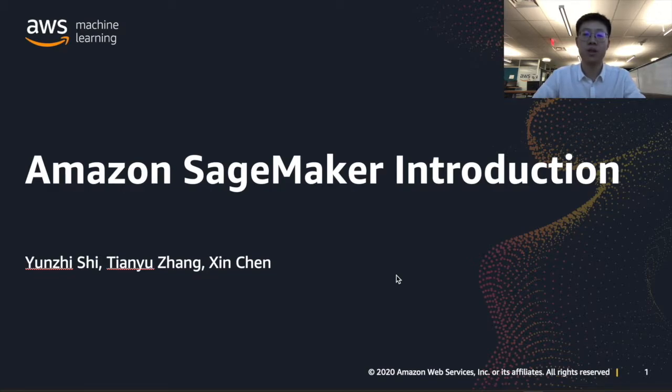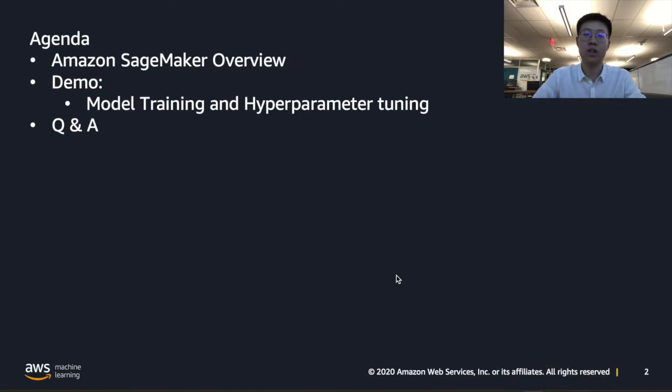we will have two parts. In the first part, I will talk about Amazon SageMaker, which can be used to build, train, and deploy machine learning models in AWS.